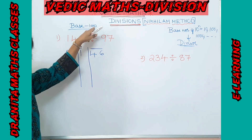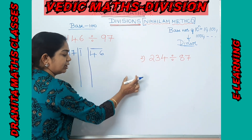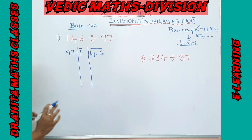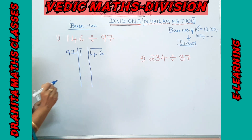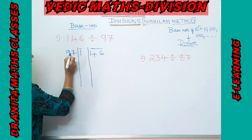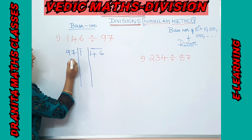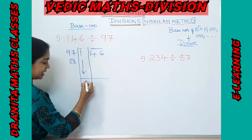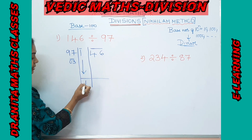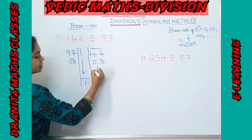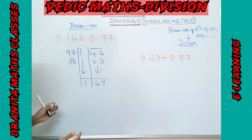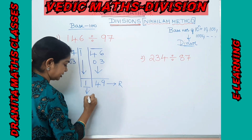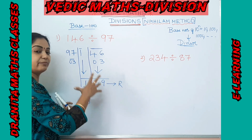For base 100, the last two digits always give the remainder. The complement of 97 relative to 100 is 03. Drop the first digit as it is: 1. Multiply 1 by the complement 3 to get 3, and add to the next group: 46 + 3 = 49. So the remainder is 49 and the quotient is 1.